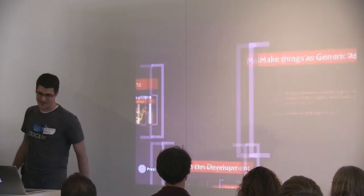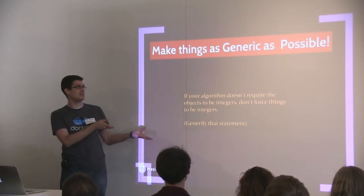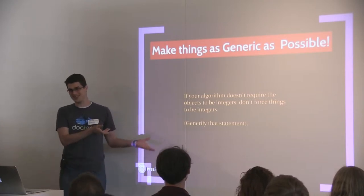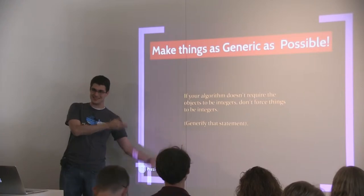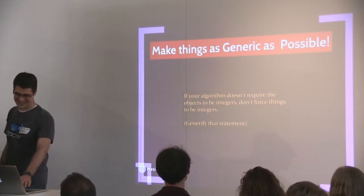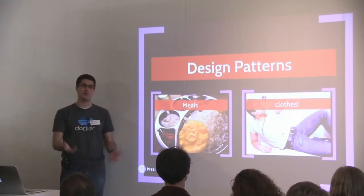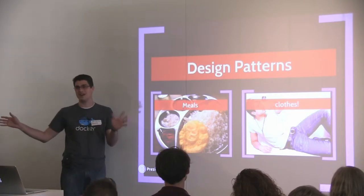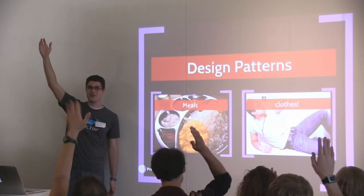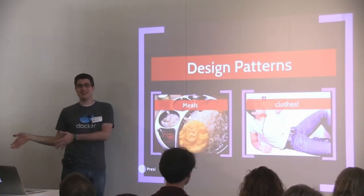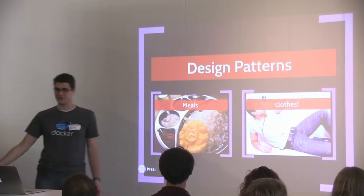Make things as generic as possible. When you're writing code, if your algorithm doesn't require objects to be integers, don't force things to be integers — try to write it in a more generic way. It leads to more reusability. Design patterns are for everything, though. Everything that we do: we have breakfast, lunch, and dinner. We're all following an eating design pattern — this is how we make sure we're properly sustained with enough time to do other things during the day.